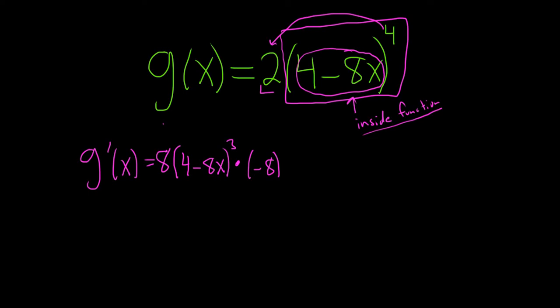So again, 4 times 2 gives us the 8. We leave the inside untouched. Subtract 1, that gives us the 3. And then we multiply by the derivative of the inside, which is simply negative 8.